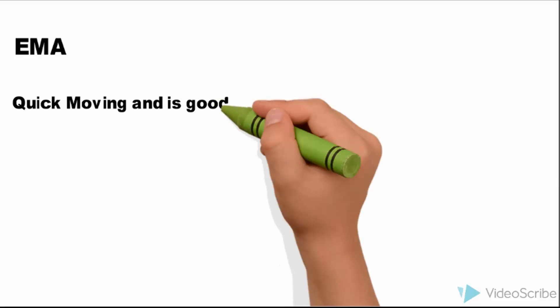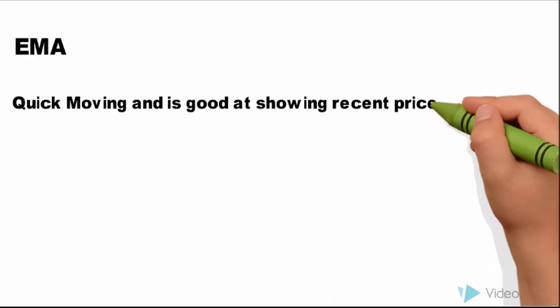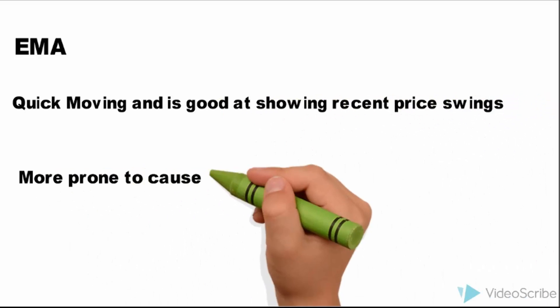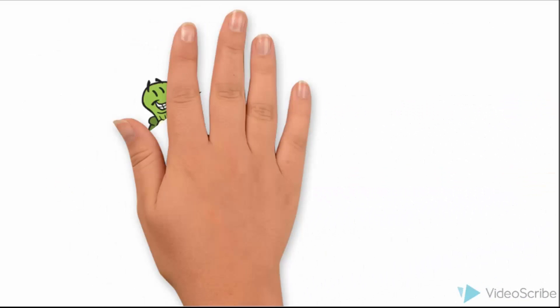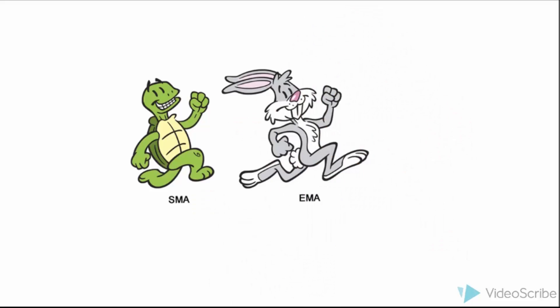EMA is quick moving and is good at showing recent price swings. Disadvantages: more prone to cause fakeouts and gives false signals. In a simple way, EMA is faster than SMA.